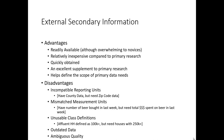Oftentimes, secondary information will also come with an unusable class definition. For example, imagine a secondary database that defines affluent households as those making over $100,000 a year. But if you're a marketer of extremely high-end luxury bathroom fixtures, your experience may tell you that you need to target households with income above $250,000. A database defining affluence at $100,000 or more will include a large quantity of households that don't actually meet your criteria, making the secondary information potentially frustrating and of questionable use.